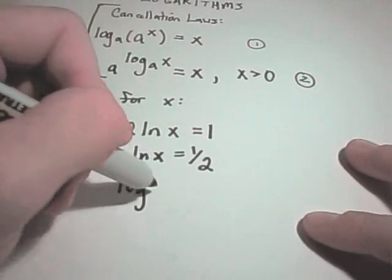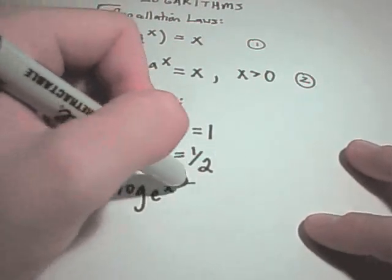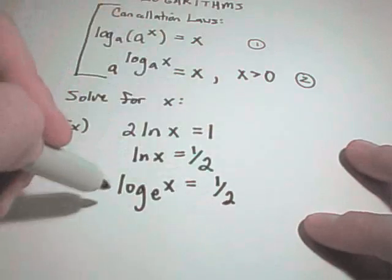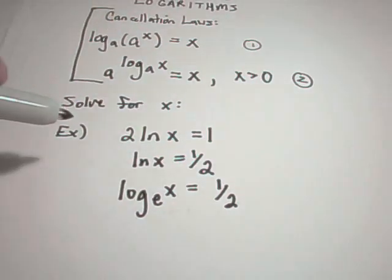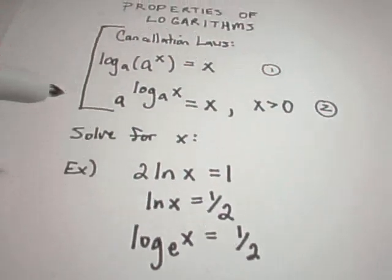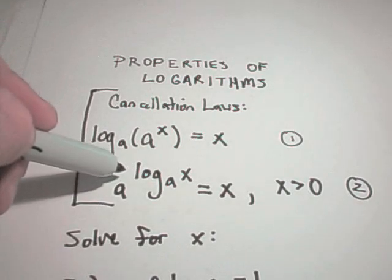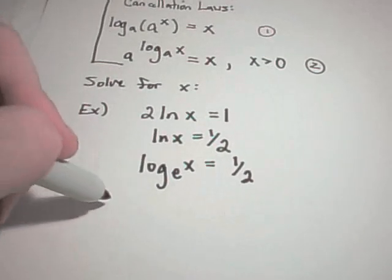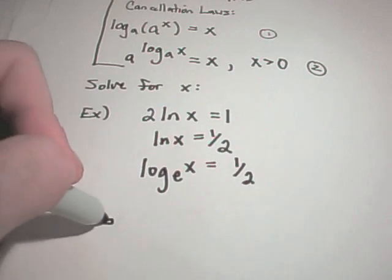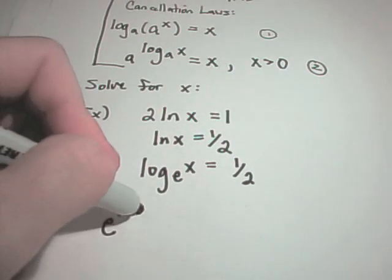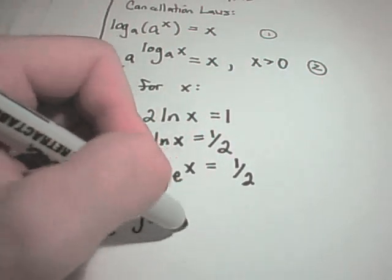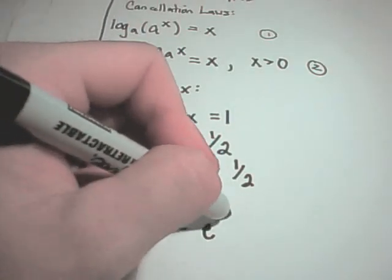Remember that ln is just a fancy way for writing log base e. So, I'm simply rewriting my ln of x as log base e of x. And now I'm going to use this cancellation property, the second one that I put up here. If I take the left side and take e and raise it to this power, you have to do it to the right side as well.